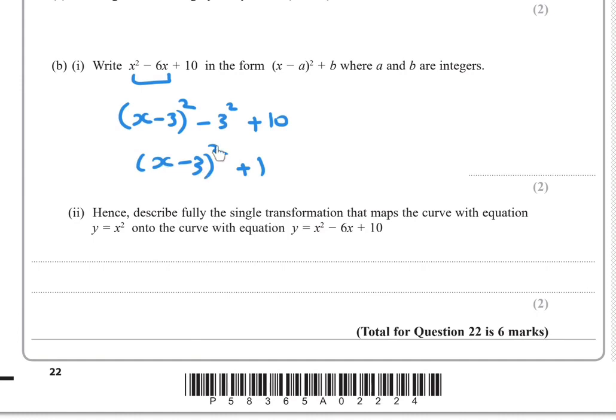x minus 3 all squared plus 1, we have a translation three units to the right and one unit up. So translation by the column vector 3, 1.